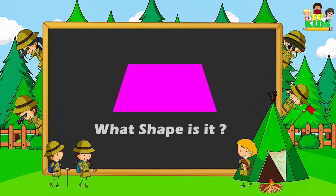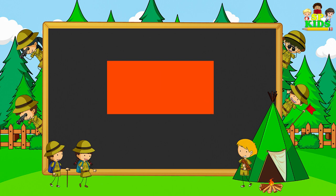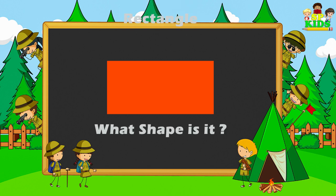What shape is it? Trapezoid. What shape is it? Rectangle.